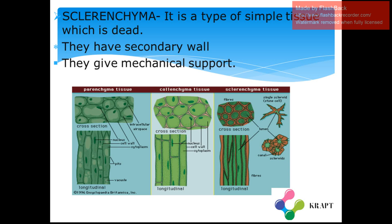Sclerenchyma is also a type of simple tissue. Unlike parenchyma and colenchyma, sclerenchyma tissue is dead. They have secondary walls and give mechanical support to the plants. In the diagram, the first figure shows parenchyma, the second shows colenchyma which are tightly packed and living, and the third figure shows sclerenchyma which are dead.